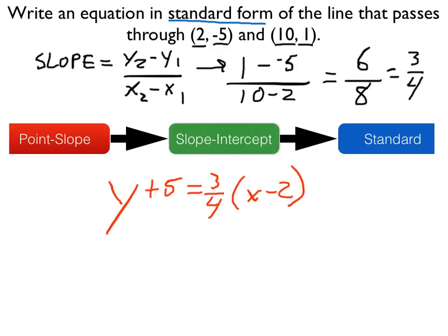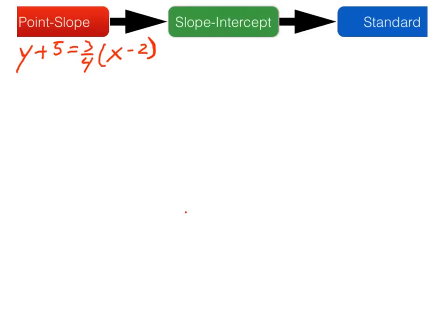Now let's work through the algebra to get to standard form. First things first, let's convert point-slope form to slope-intercept form. So first use the distributive property, distribute three-fourths times x and times negative two. Three-fourths times x of course is three-fourths x. Three-fourths times negative two is going to give us negative six over four.